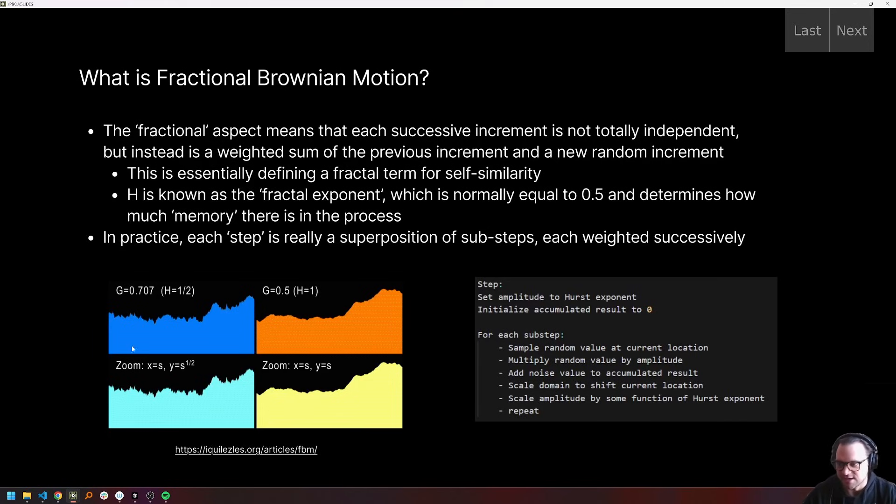I took a little chart that shows some examples here for a couple of different values of H, which is known as the fractal exponent. And that is essentially the value that is used, the parameter that determines how much self similarity there's going to be in a fractional Brownian motion process. So in practice, when we're talking about noise, what we're really saying is each step is going to be a superposition of sub steps and each of those sub steps will be weighted.